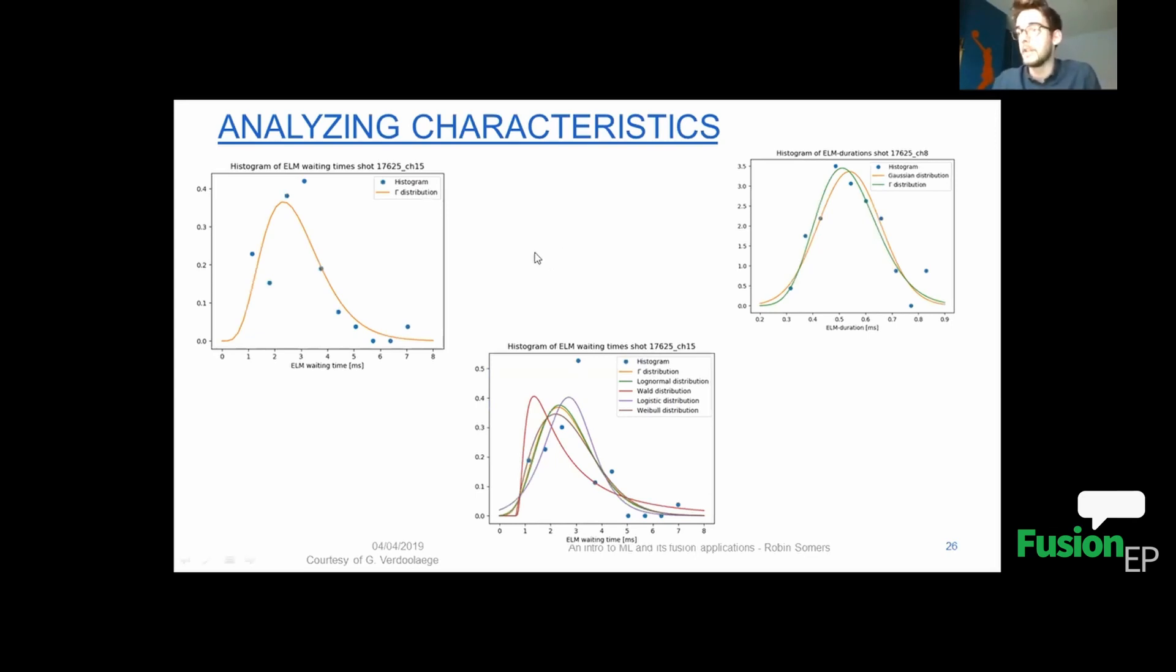And basically what we are aiming for is, for example, to be able to distinguish between type 1 and type 3 ELMs or type 1, type 2, type 3, type 4 ELMs. There are different kinds of ELMs. So this would be very useful if we could recognize them.